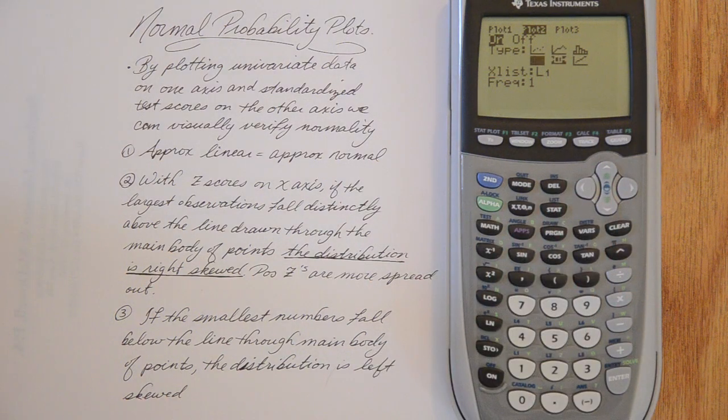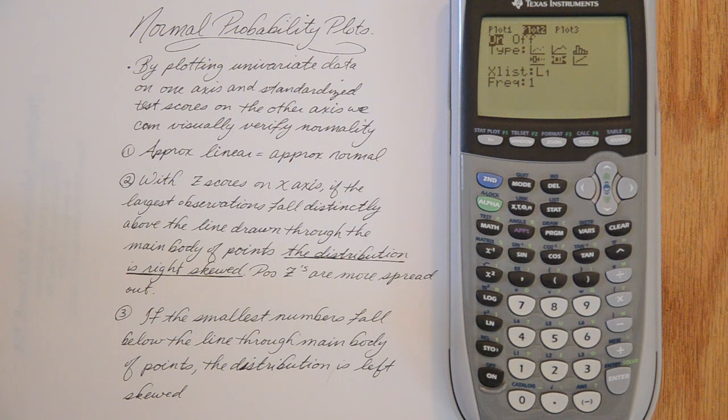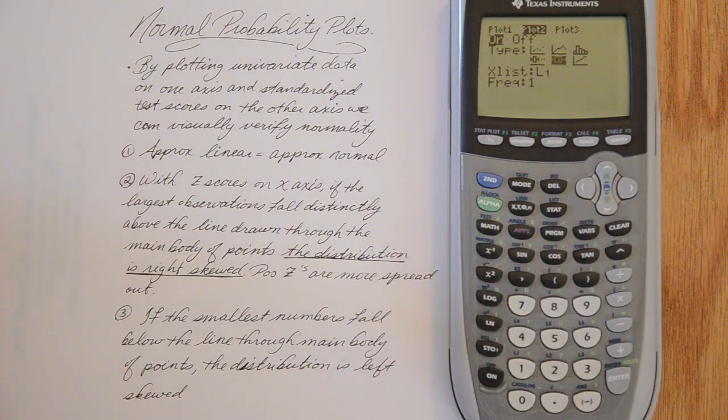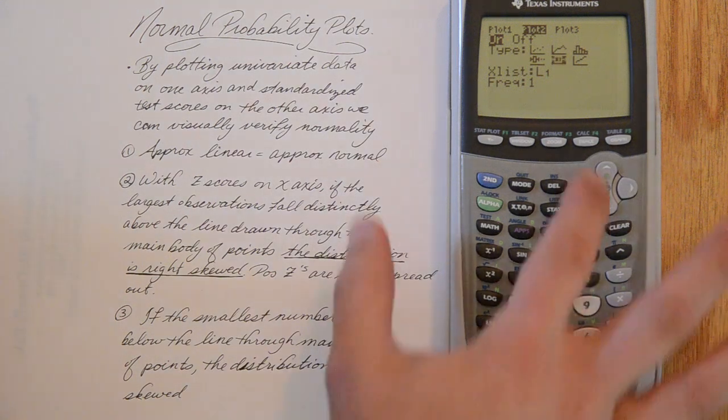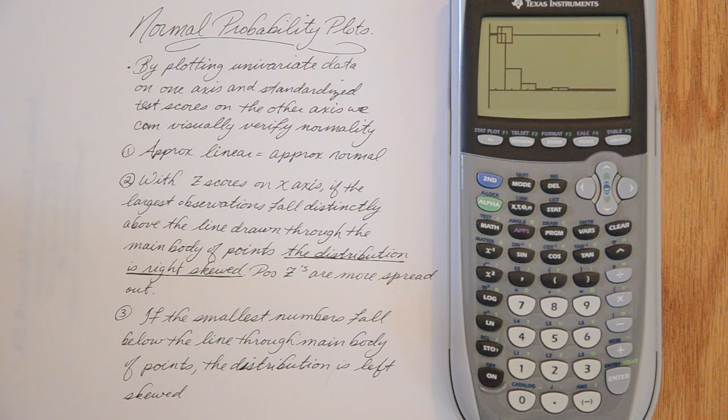Because identifying outliers is not going to be very appropriate since this data is clearly not normal. And that means a lot more pieces of data will fail that IQR test than they should. So we are just going to go ahead and do the regular box plot. Hit zoom nine. And here we have the histogram and the right skewed box plot laid on top of it.